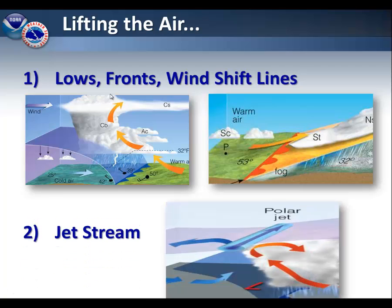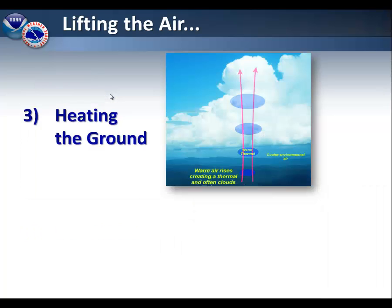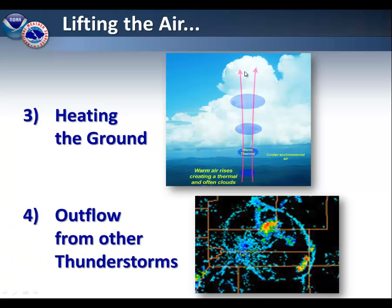Another way that we can create lift is through the jet stream. Also, we can create lift by heating the ground. As the heat of the day increases, warm air will rise from the ground, creating a thermal and often producing clouds as well. A fourth way of lifting the air is what we call outflow boundaries coming from additional thunderstorms. In this particular image, the ring going across the central part of the image is outflow from previous thunderstorms, and we'll talk about that a little more later on.